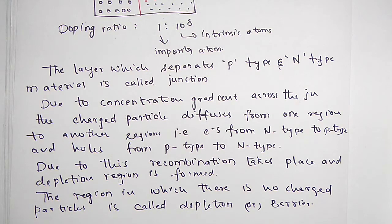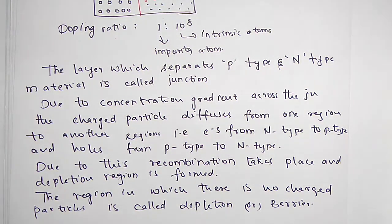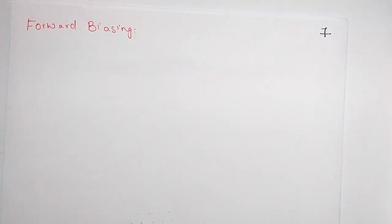To make current conduction, the PN junction diode must be biased — that means you have to remove the depletion region. The depletion region is due to majority carriers only. To make current conduction the PN junction diode must be biased, and there are two types of biasing: one is forward biasing and another one is reverse biasing.